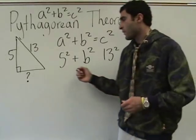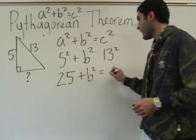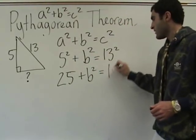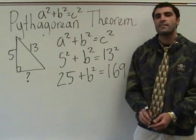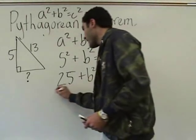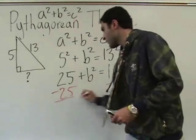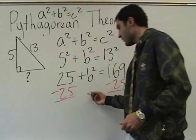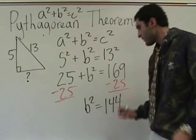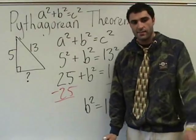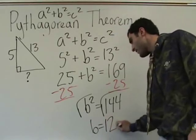Five squared is twenty-five. You leave B squared. And then thirteen squared is one sixty-nine. What do we do to both sides? Subtract twenty-five. And then it'll be B squared equals one forty-four. B squared is one forty-four. Square root both sides. Twelve. B equals twelve. So that's our answer: twelve.